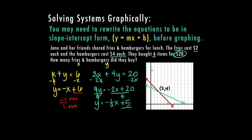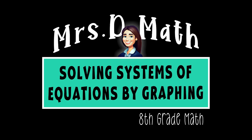We can see pretty quickly that our point of intersection is at (2, 4). Plugging back into the original equations: in the first equation, 2 plus 4 equals 6 — that works. In the second equation, 2 times 2 is 4, plus 4 times 4 is 16, and 4 plus 16 equals 20 — that works too. So this means Jane and her friends bought 2 fries and 4 hamburgers.